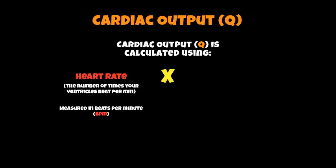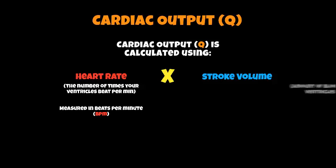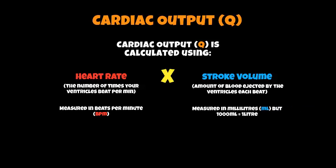We need to multiply heart rate by what we call stroke volume to find cardiac output — so heart rate times stroke volume equals cardiac output. Stroke volume is the amount of blood ejected by the ventricles each beat, and that is always measured in millilitres.